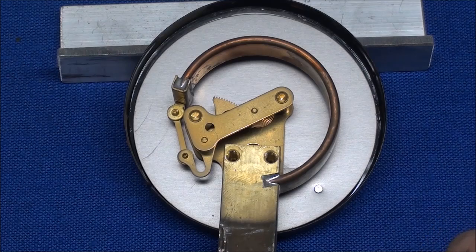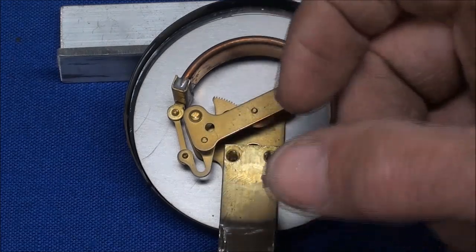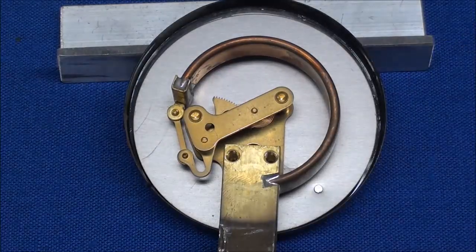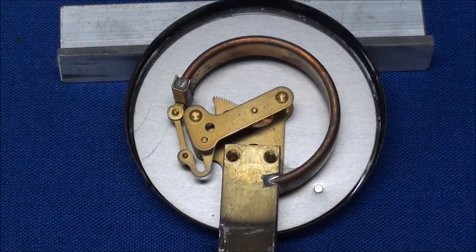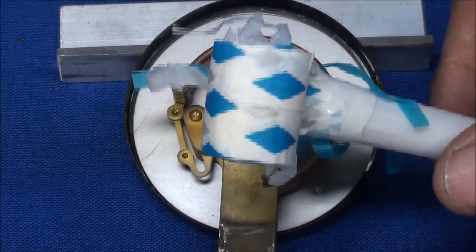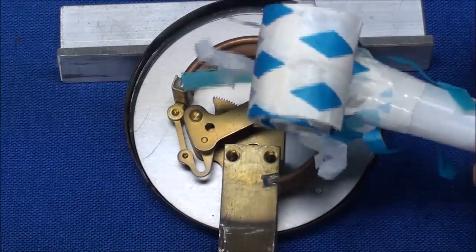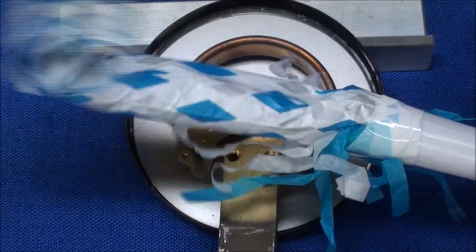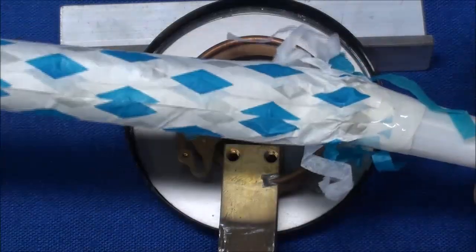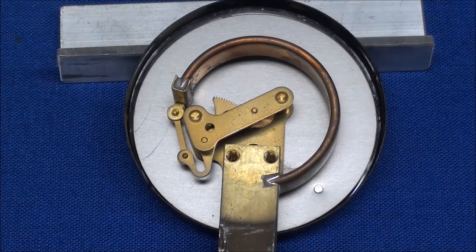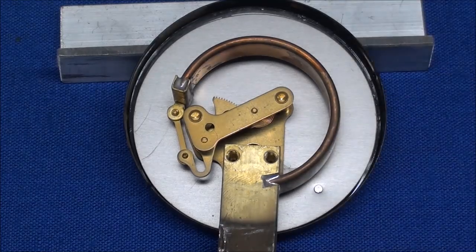Now when the pressure comes on, the Bourdon tube attempts to straighten out. Now it's not going to go all the way, it's only going to flex a little bit, and in some ways it's similar to a party whistle, attempting to straighten up and always returning to its original position.